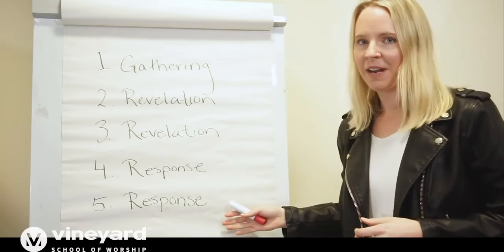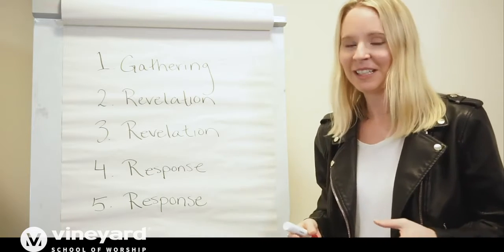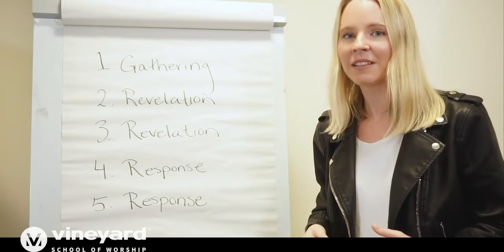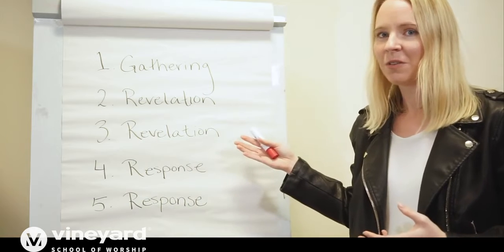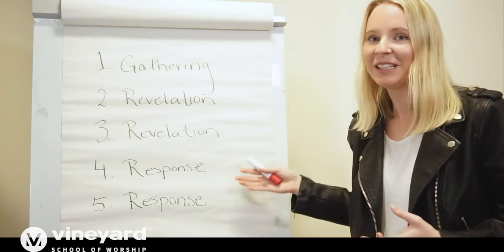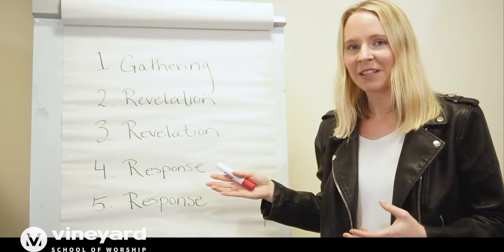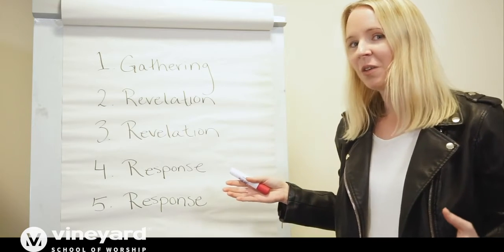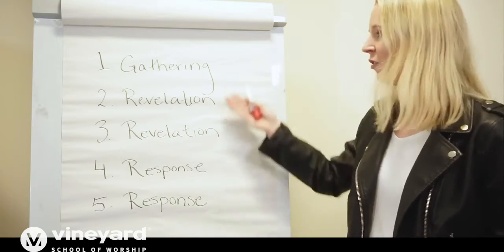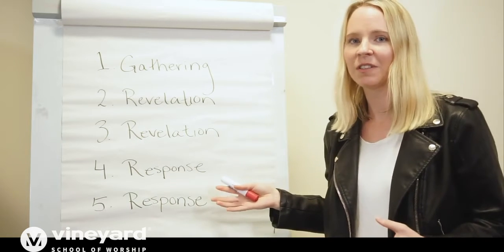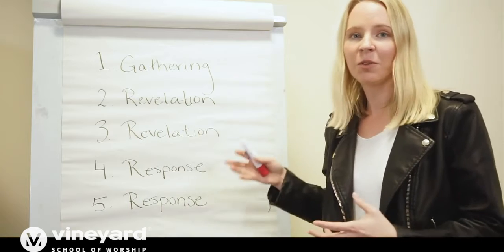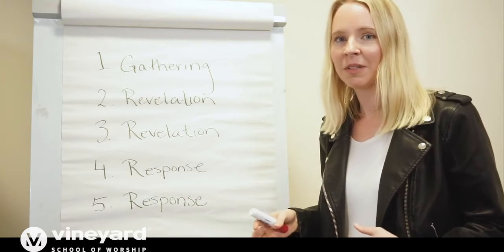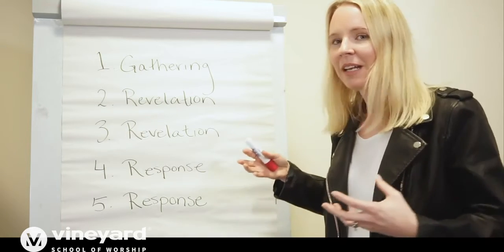Songs four and five are a great spot to intentionally pursue that place of intimate worship, that place of visitation — we can't take it for granted. Although many of us are in a rush to get there, sometimes we get in the zone of singing songs about God, and it's maybe easier than really leaning into intimacy and that place of vulnerability and space before the Lord. You could do it in four songs, drop the gathering song, or do one revelation and two response for a shorter set. For a longer set you might loop through and cycle through again.